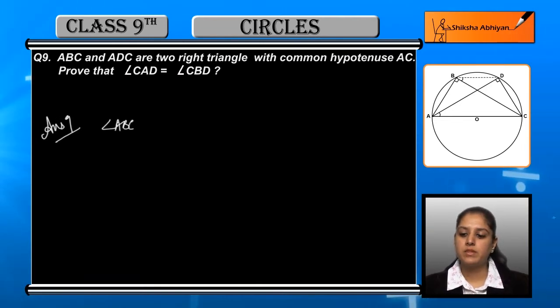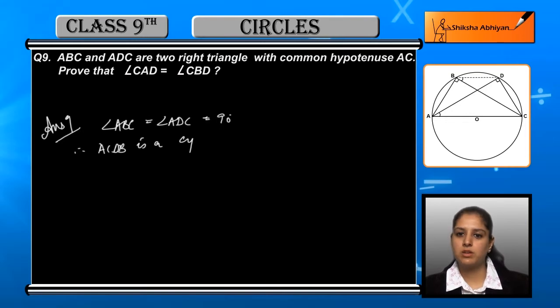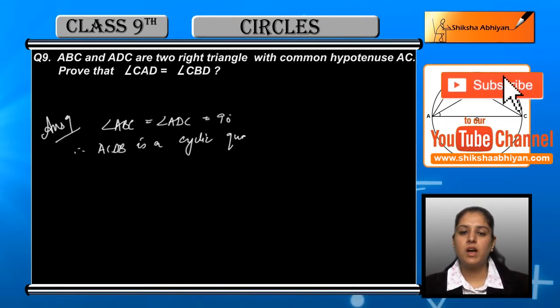ABC and ADC are right angle triangles and right angle triangles are 90 degrees in measurement, so we can say that ACDB is a cyclic quadrilateral because if a line segment subtends equal angles at two other points.